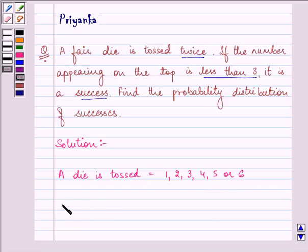Now we are given that it will be a success if the number on the die is less than 3. That is, the numbers which are less than 3 over here are 1 and 2.